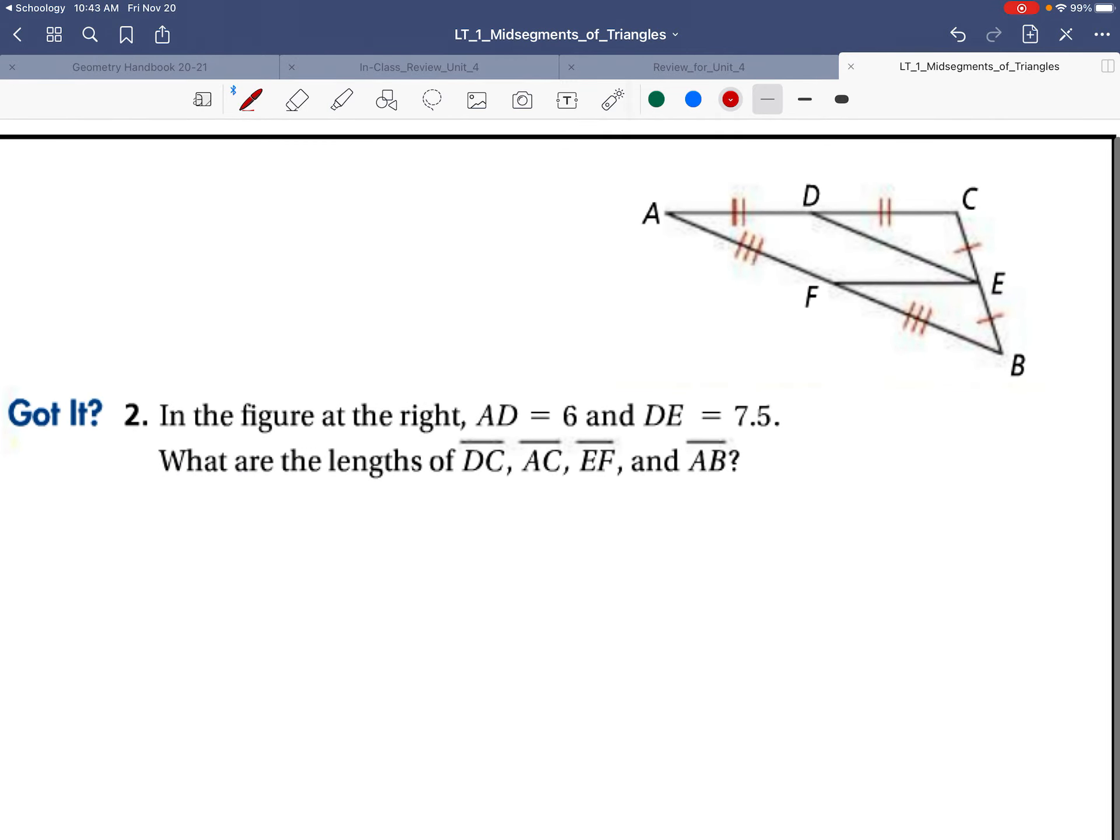Try this one. Here we've got AD is 6, DE is 7.5. What are the lengths of DC, AC, EF, and AB? Pause the movie, try this on your own, and press play when you are finished.